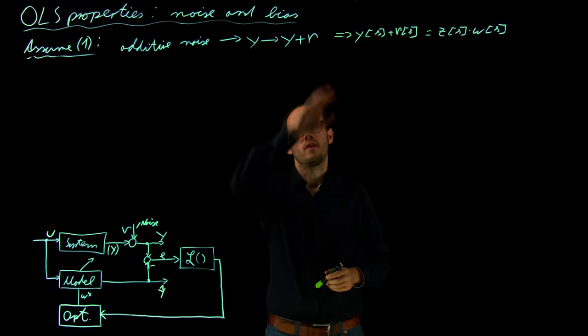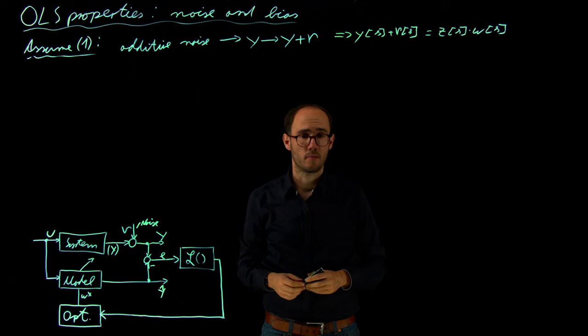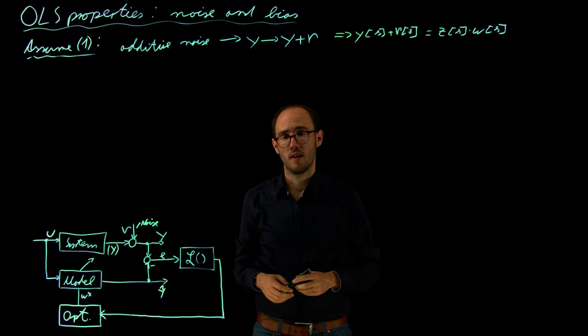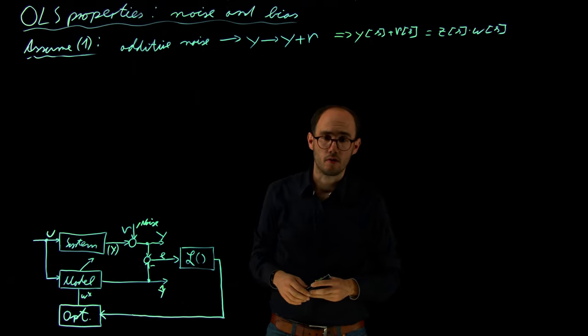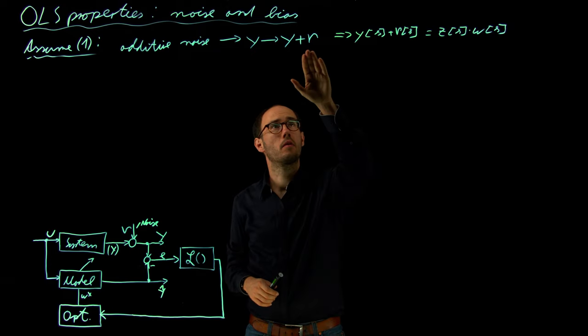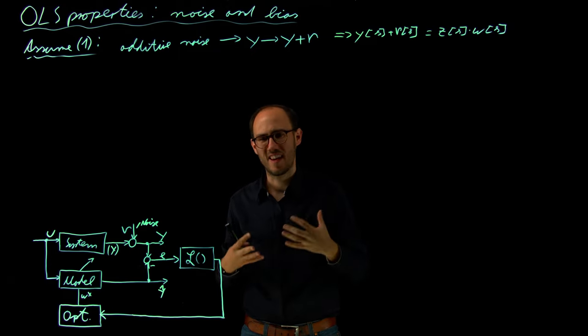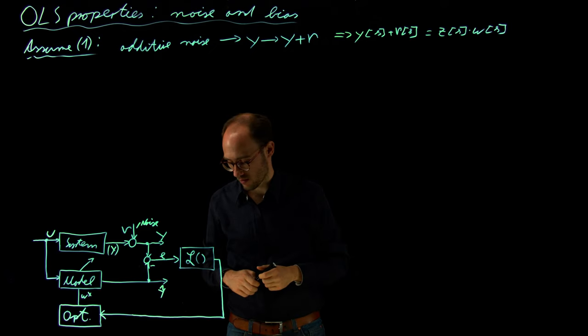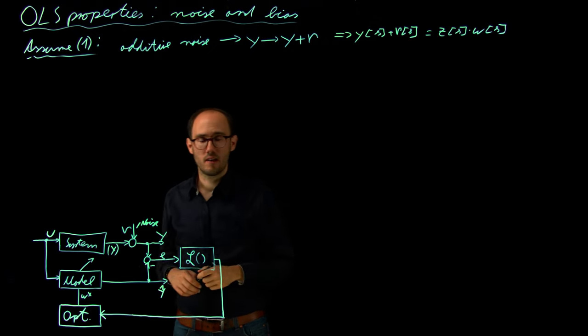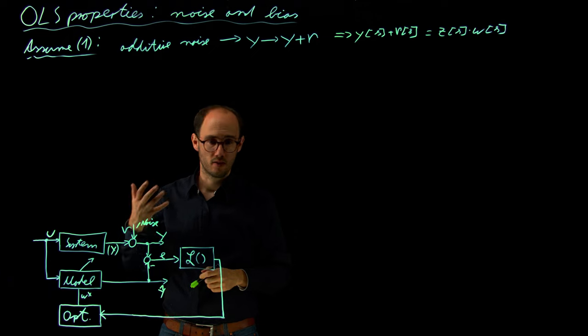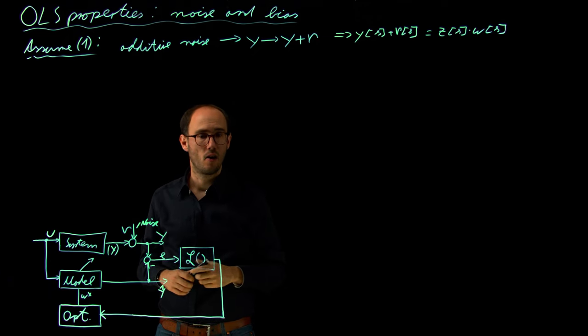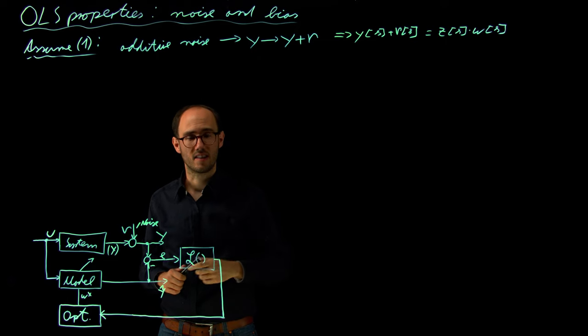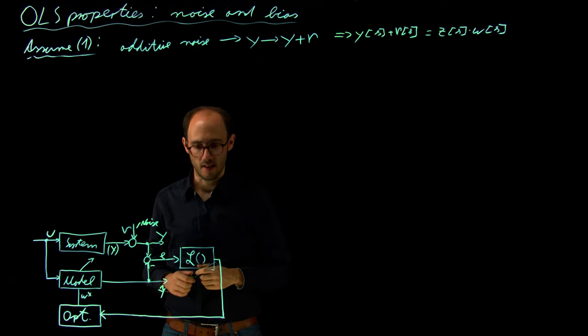The noise normally comes from sensor noise, for example, or from inaccurate observations of the output. And therefore, we will consider this noise process here as a random noise process. And therefore, we are interested into some stochastic properties of the OLS parameter estimator, considering this random noise which is applied to the output.